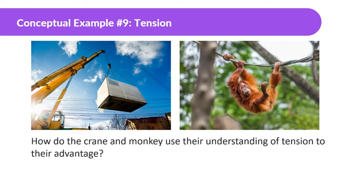Let's look at this example: how do the crane and monkey use their understanding of tension to their advantage? Looking at the monkey, we can see it is using many of its limbs to distribute the tension. A lot of times monkeys will use both their hands and their feet, and sometimes even their tail, to make sure there's not as much tension on any one limb. The tension is distributed among the limbs.